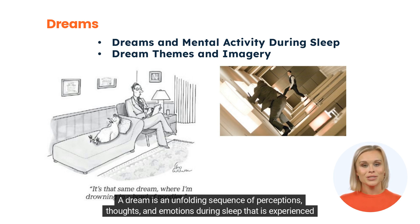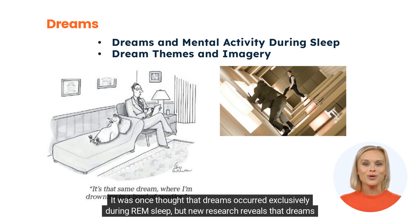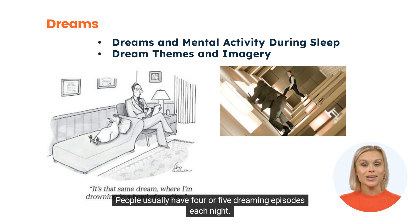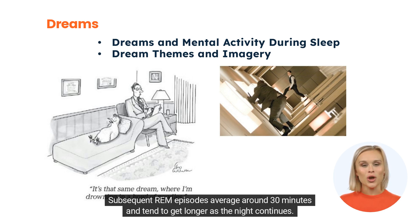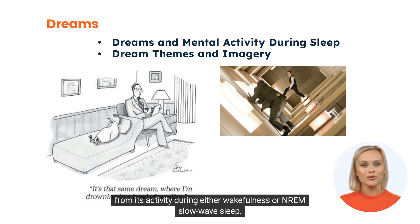A dream is an unfolding sequence of perceptions, thoughts, and emotions during sleep that is experienced as a series of real-life events. It was once thought that dreams occurred exclusively during REM sleep, but new research reveals that dreams also occur during NREM sleep. People usually have four or five dreaming episodes each night. The first REM episode of the night is the shortest, lasting only about 10 minutes. Subsequent REM episodes average around 30 minutes and tend to get longer as the night continues. PET and fMRI scans have revealed that the brain's activity during REM sleep is distinctly different from its activity during either wakefulness or NREM slow-wave sleep.